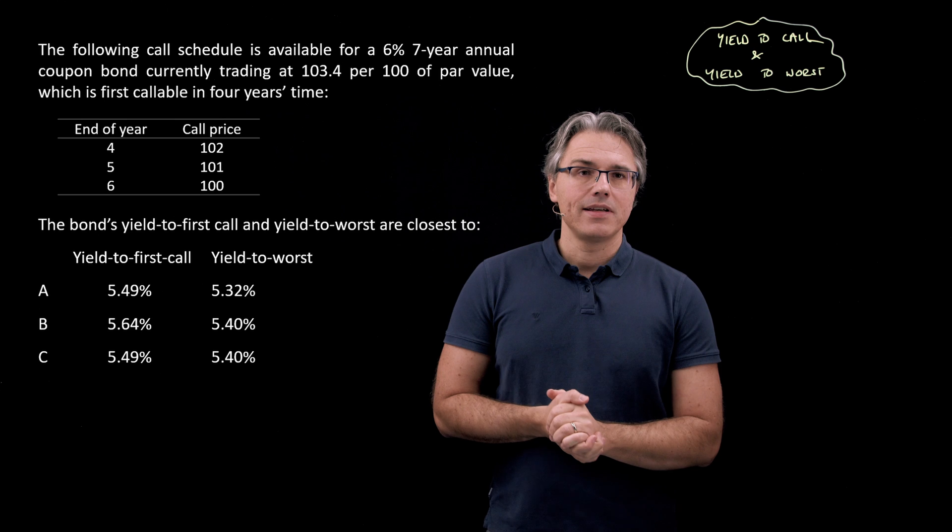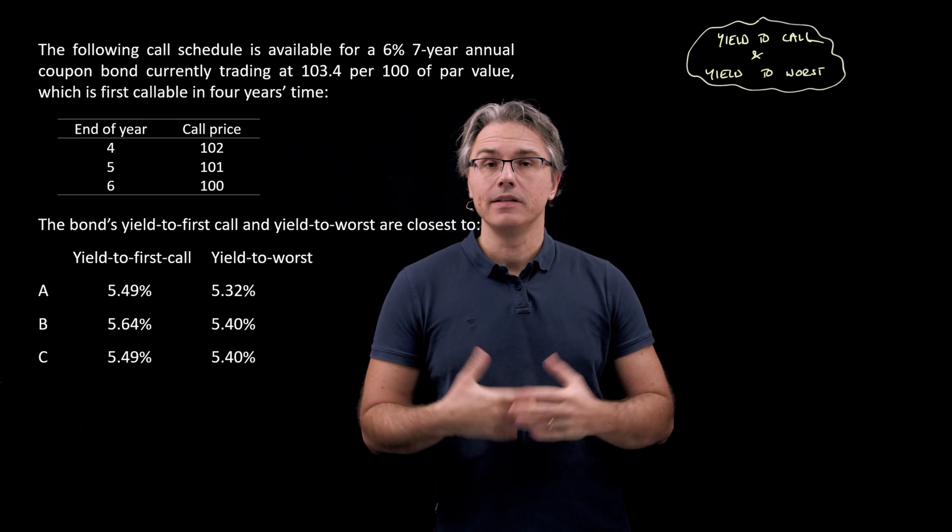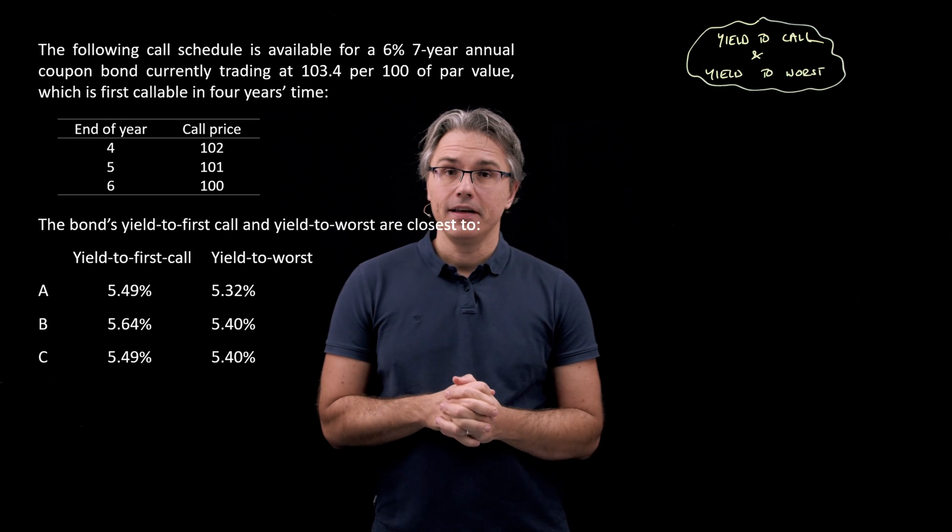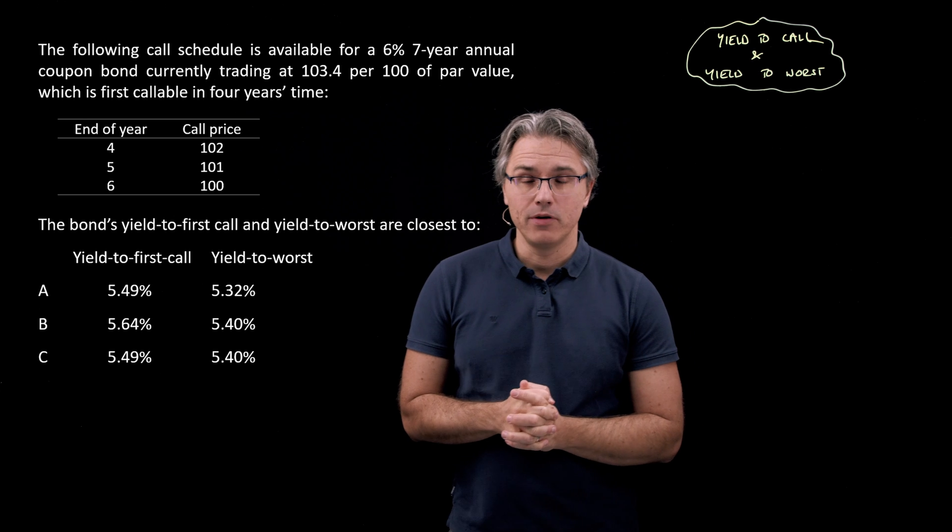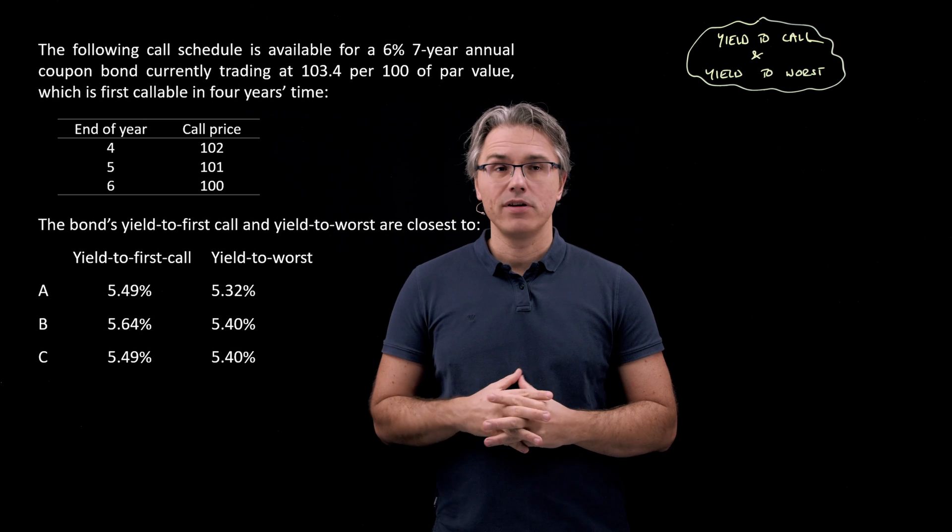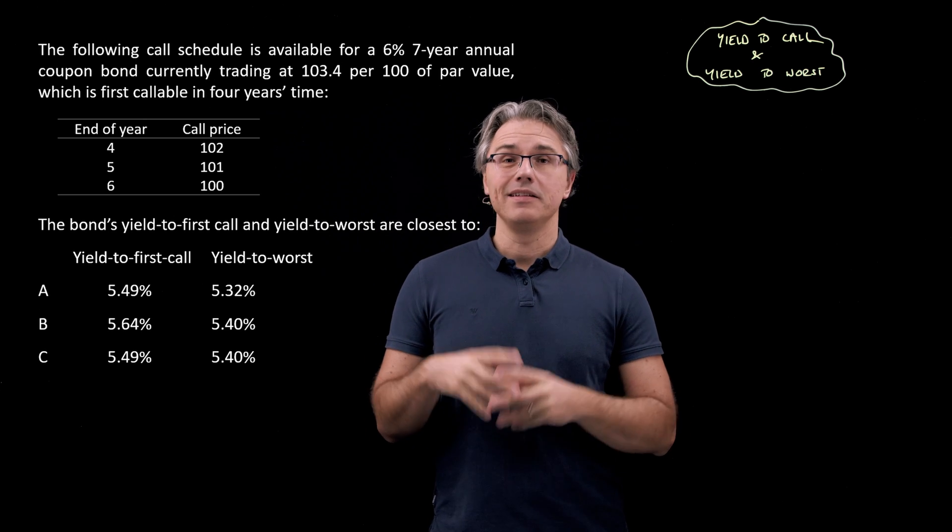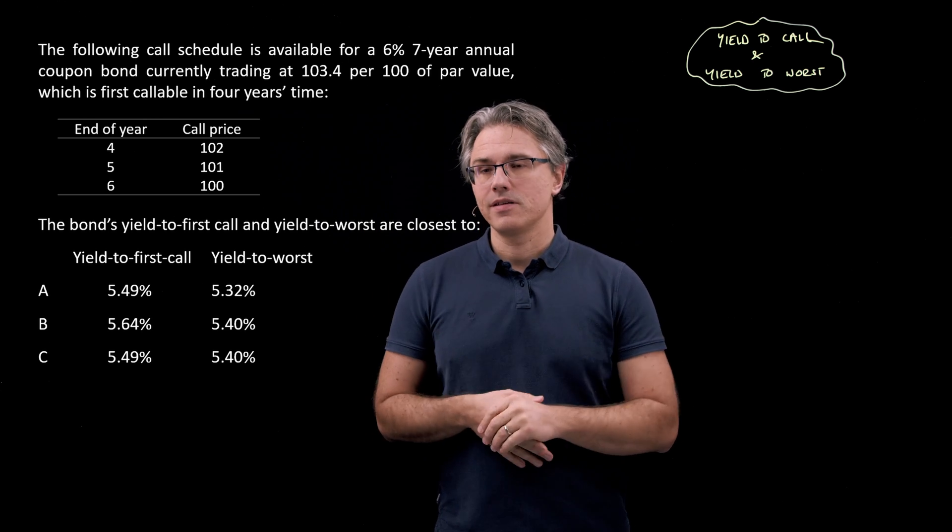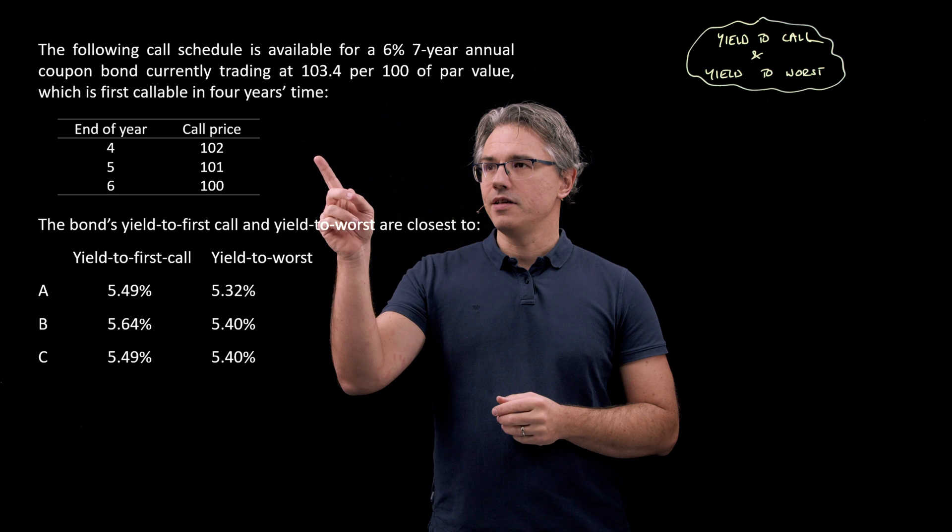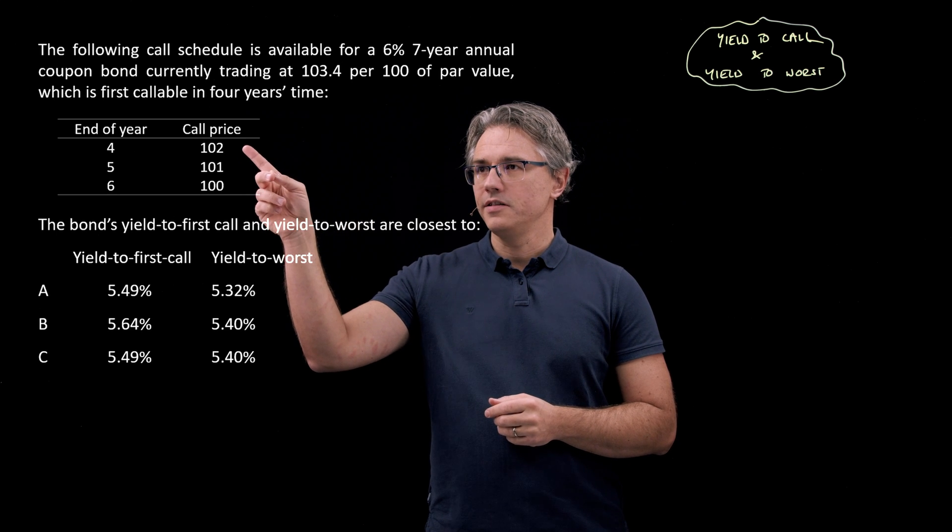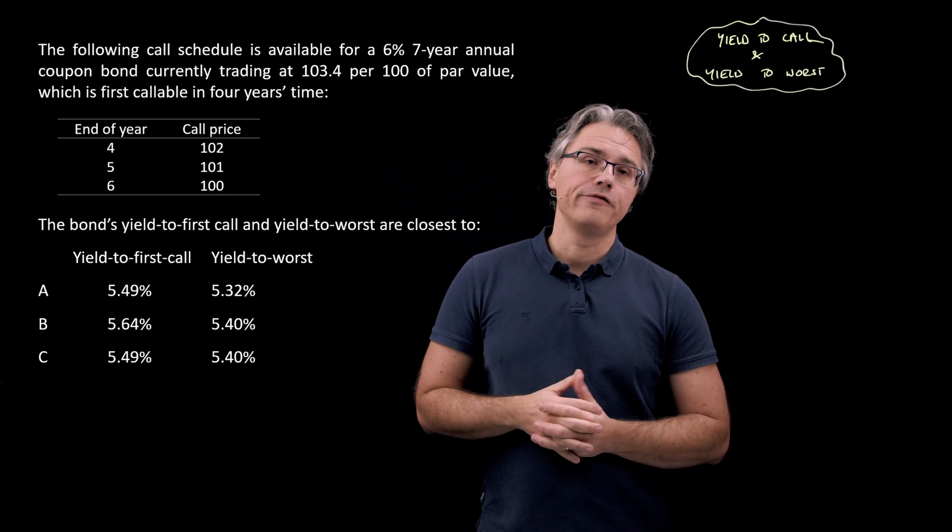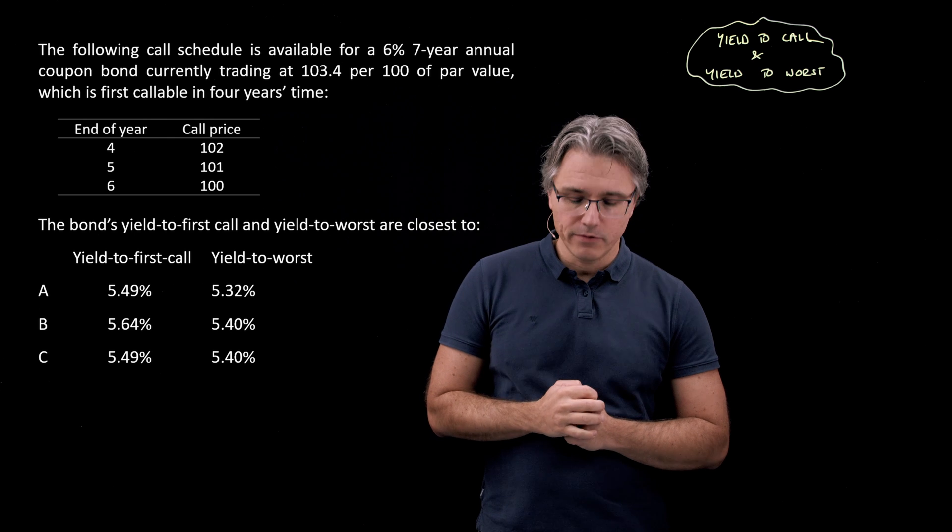Okay, so when you have a callable bond, the issuer may move forward the redemption date and that's a choice which the issuer has. Bond holders have to give up the bond and receive whatever is the price. We're supposed to calculate the yield under certain assumptions: that it's called on the first date, that's the yield to first call at the end of the fourth year under these terms. And then we're also supposed to find what would be the worst option for the investors—that's going to be the yield to worst.